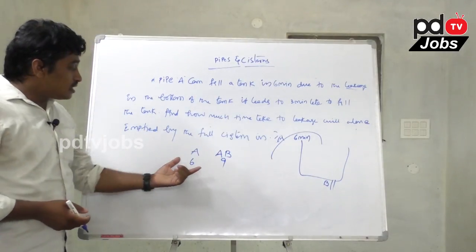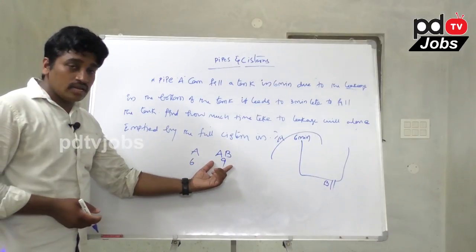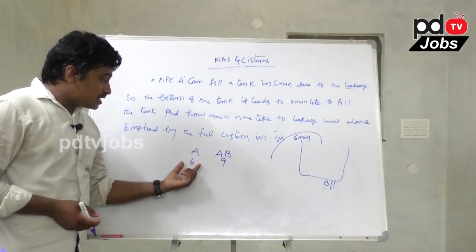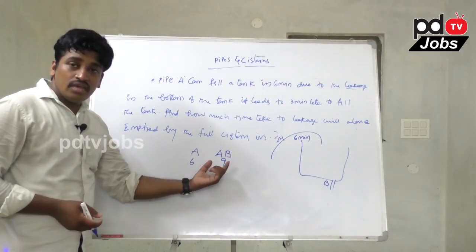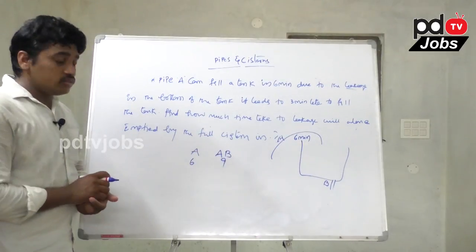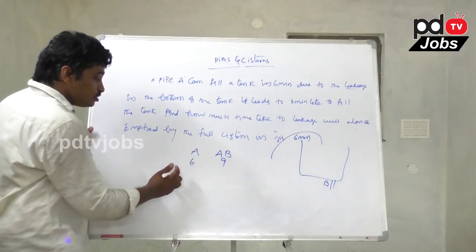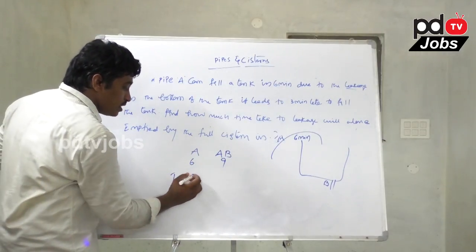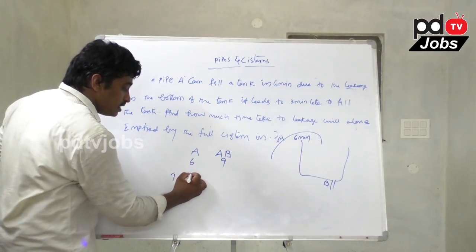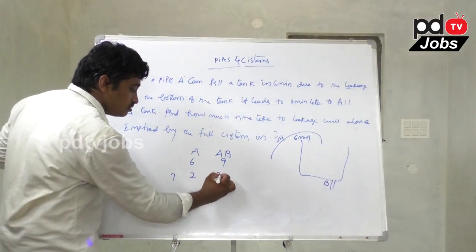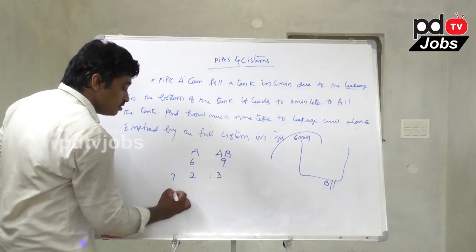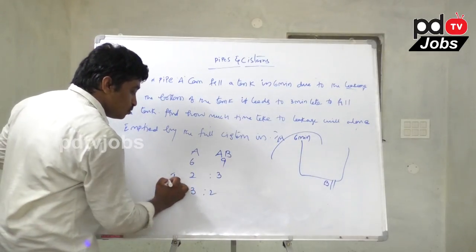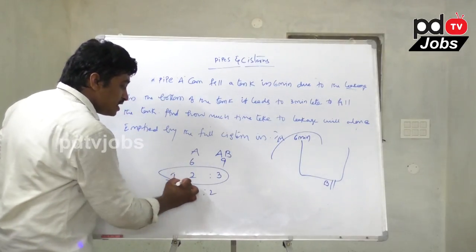Three minutes late means it fills in nine minutes. So A fills in six minutes, and with leakage (B) fills in nine minutes. Time ratio is six to nine, which simplifies to two to three. Therefore efficiency ratio is three to two.